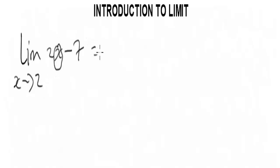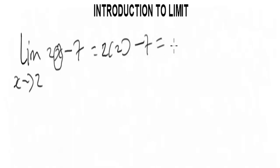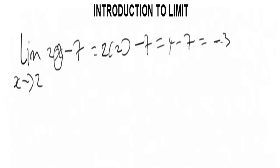When you do it, you are going to have 2 and bracket 2 minus 7. When you simplify it further, you are going to have 4 minus 7, which gives you negative 3. So that will be the answer.